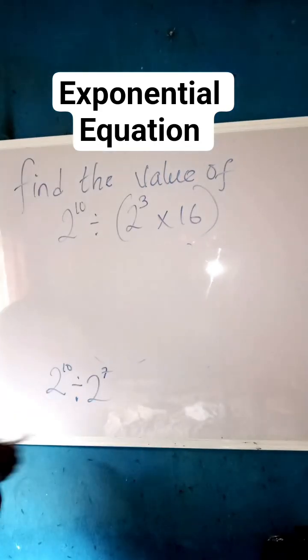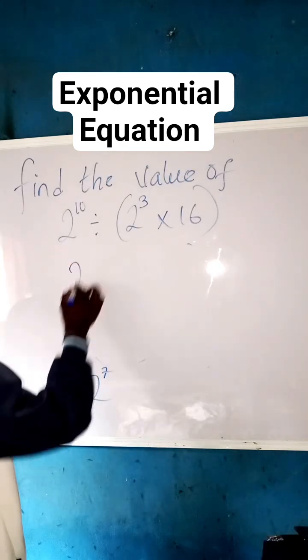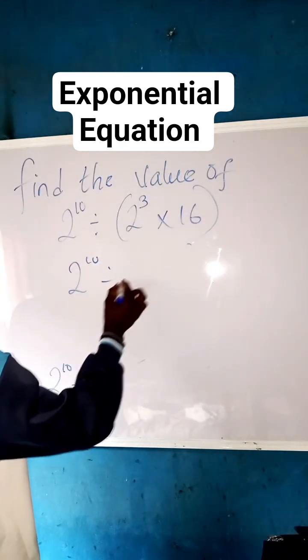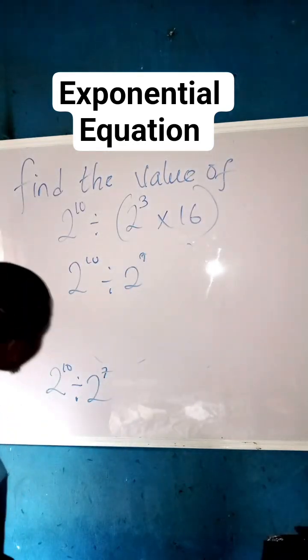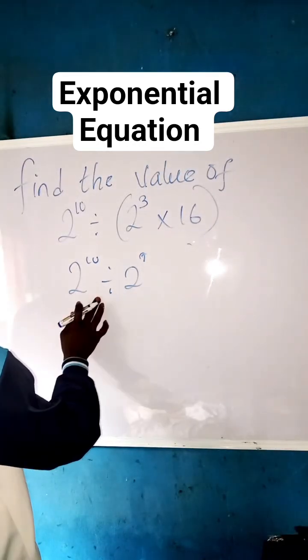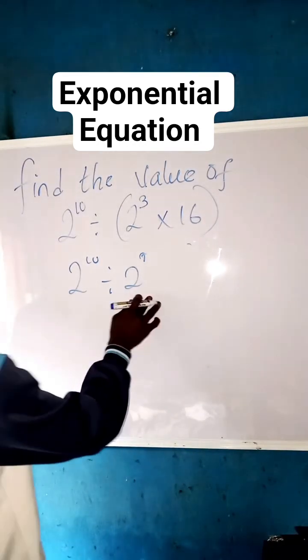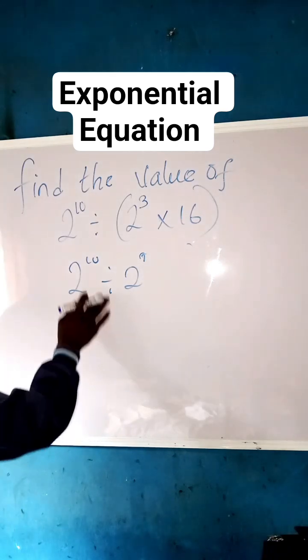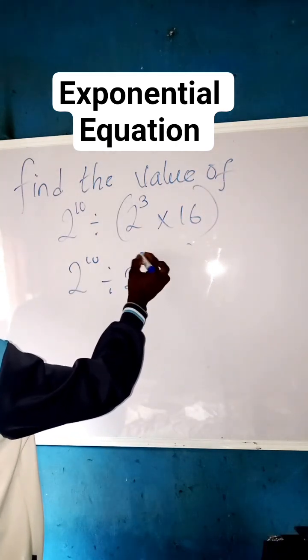2 raised to the power of 10 divided by 2 raised to power of 7. And also in the law of indices, it says whenever we are having the same base and division sign in the midst, or dividing each other with different powers, what we can equally do is to pick one of the base and...